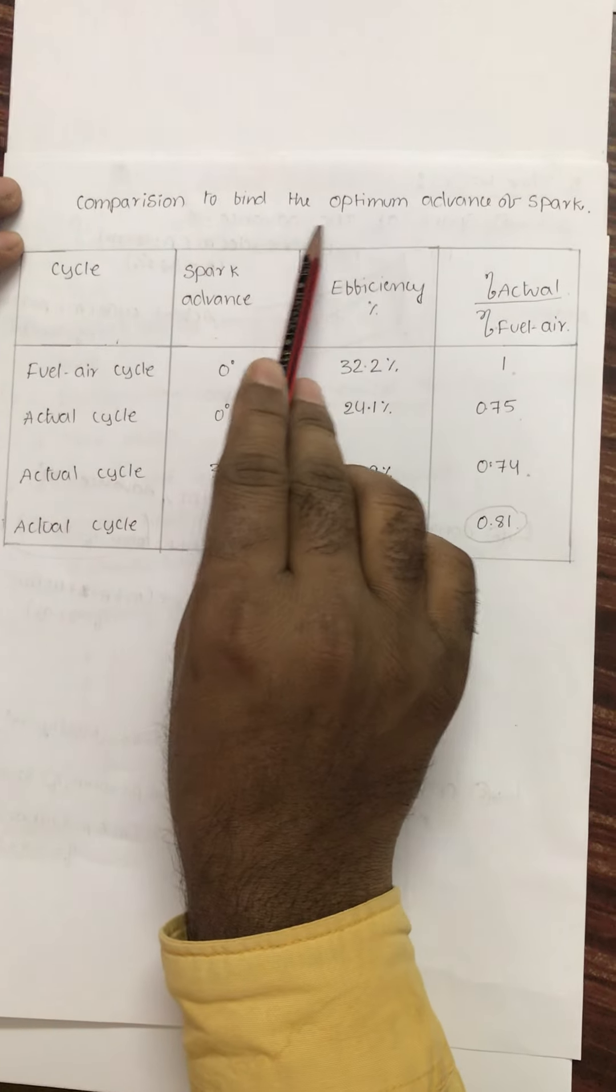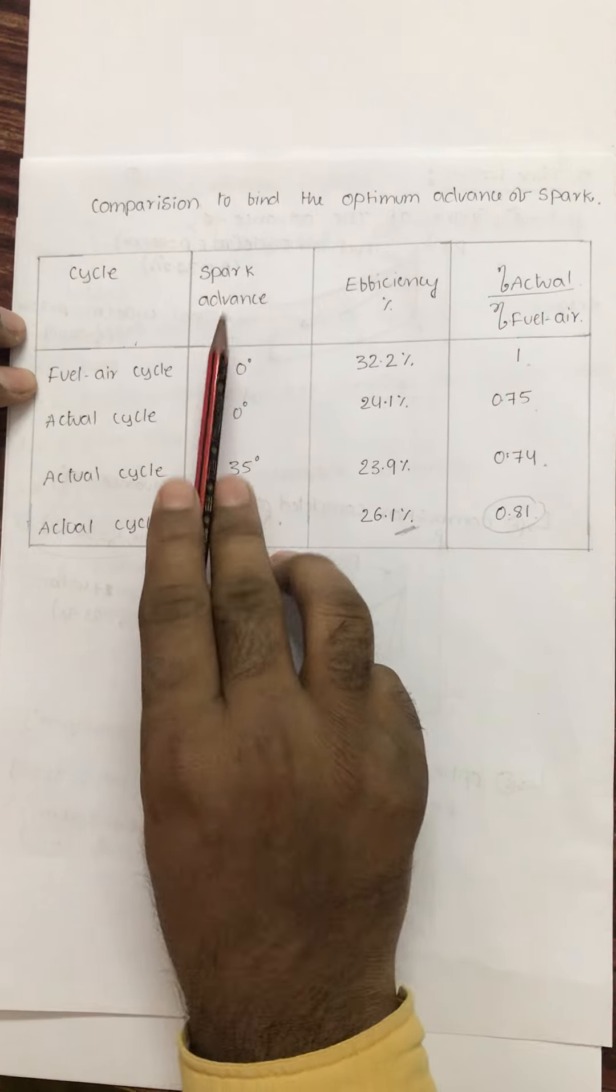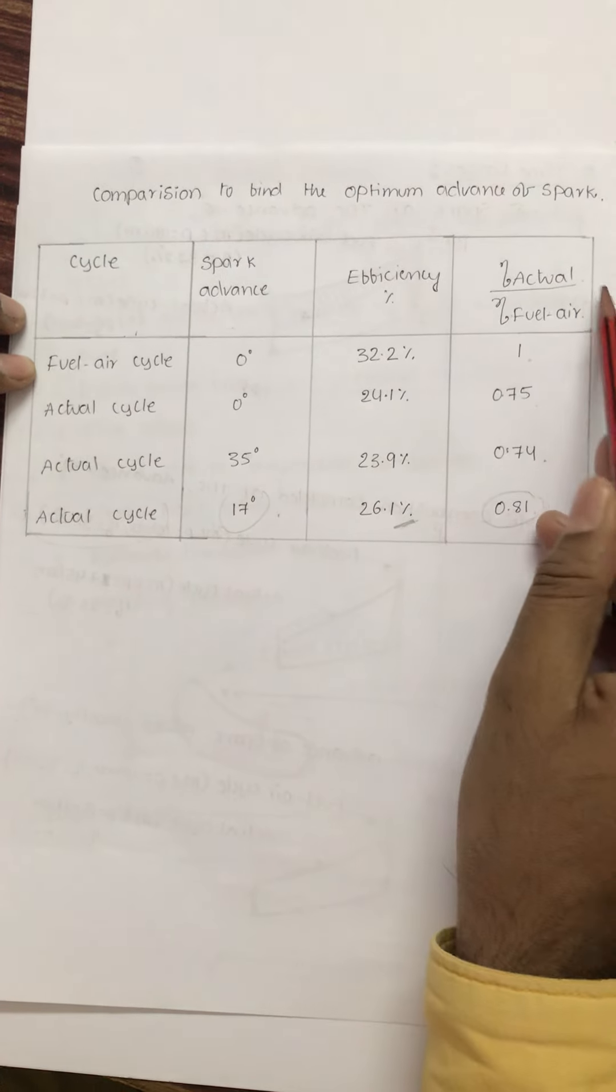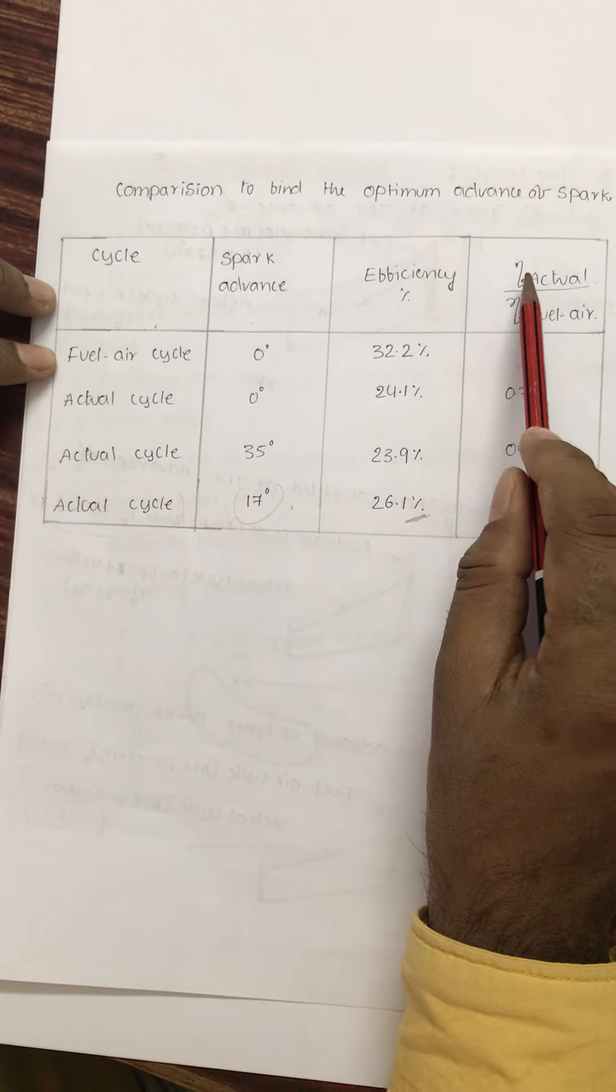This is the comparison to find the optimum advance of spark. See, this is the cycle, spark advance, efficiency, and this is the ratio of actual efficiency by fuel-air efficiency. So that means it is ideal condition like that.